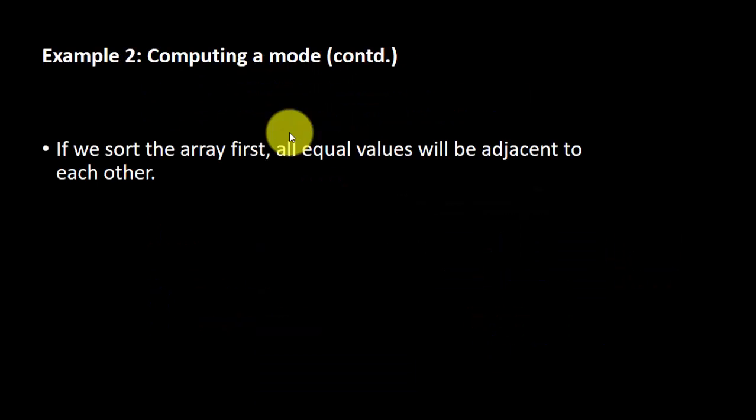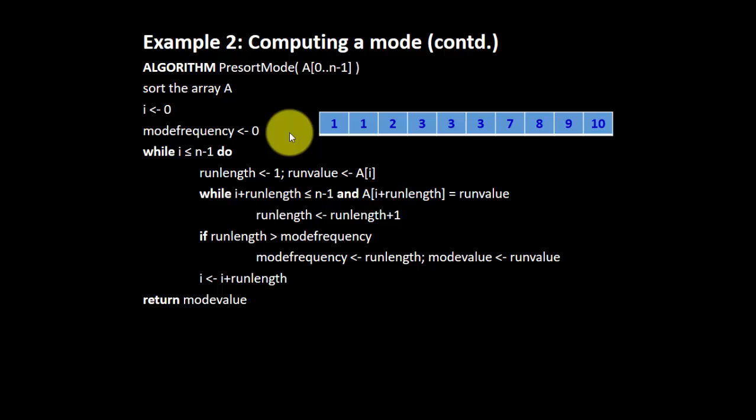So, if we implement pre-sorting, we sort the array first, so all equal values will be adjacent to each other. So, it's similar with the previous example. We sort the element, sort the array.